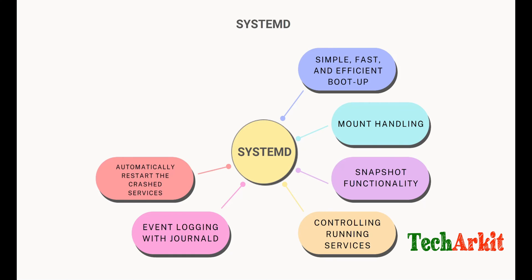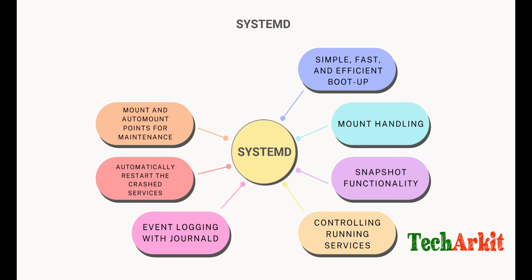systemd can automatically restart crashed services, which is a major capability for service availability. If an administrator is not monitoring or is unavailable, systemd automatically restarts crashed services — a major benefit for production environments. systemd can also handle mount points and auto-mounts, making it easier to manage file systems and storage devices. Additionally, systemd uses Linux control groups (cgroups) for resource management and process tracking.